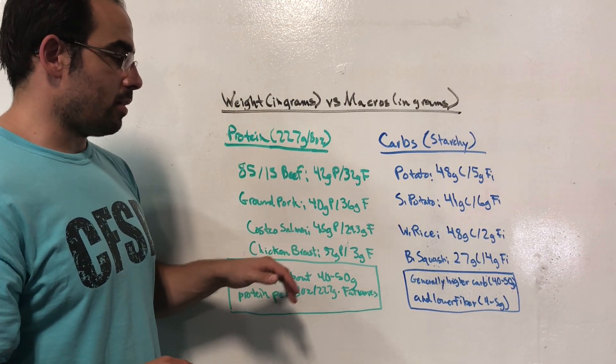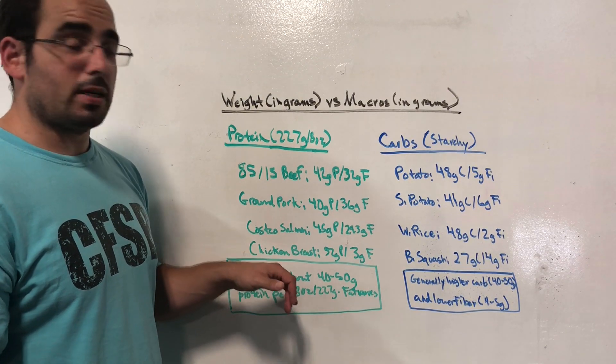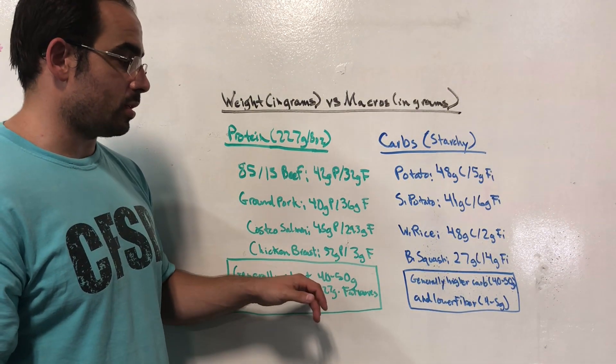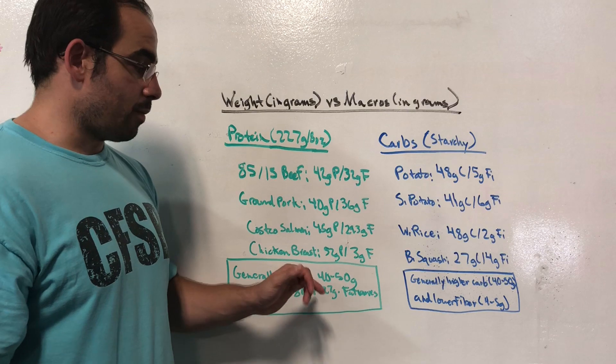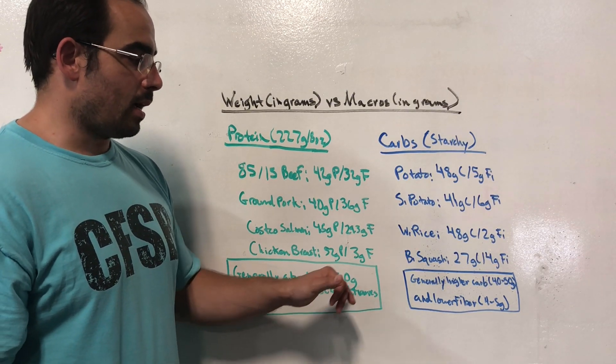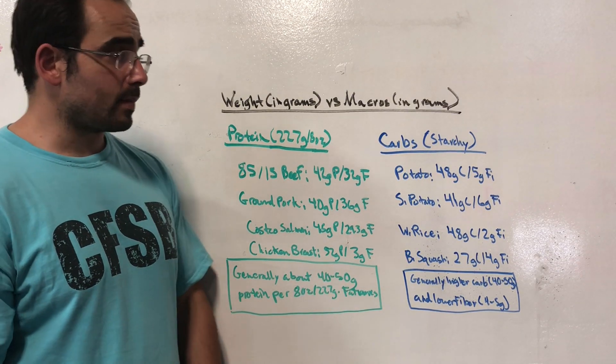So generally speaking, there are about 40 to 50 grams of protein per eight ounce serving of animal protein, which is about 227 grams. The fat is going to vary.